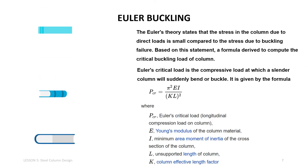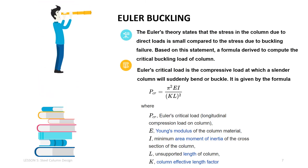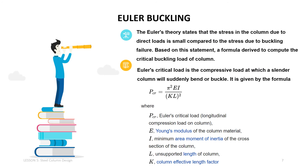Euler's critical load is the compressive load at which a slender column will suddenly bend or buckle. It is given by the formula: PCR is the Euler's critical load — the longitudinal compression load on the column. E is Young's modulus of the column material, I is the minimum area moment of inertia of the cross-section of the column, L is the unsupported length of the column, and K is the column effective length factor.